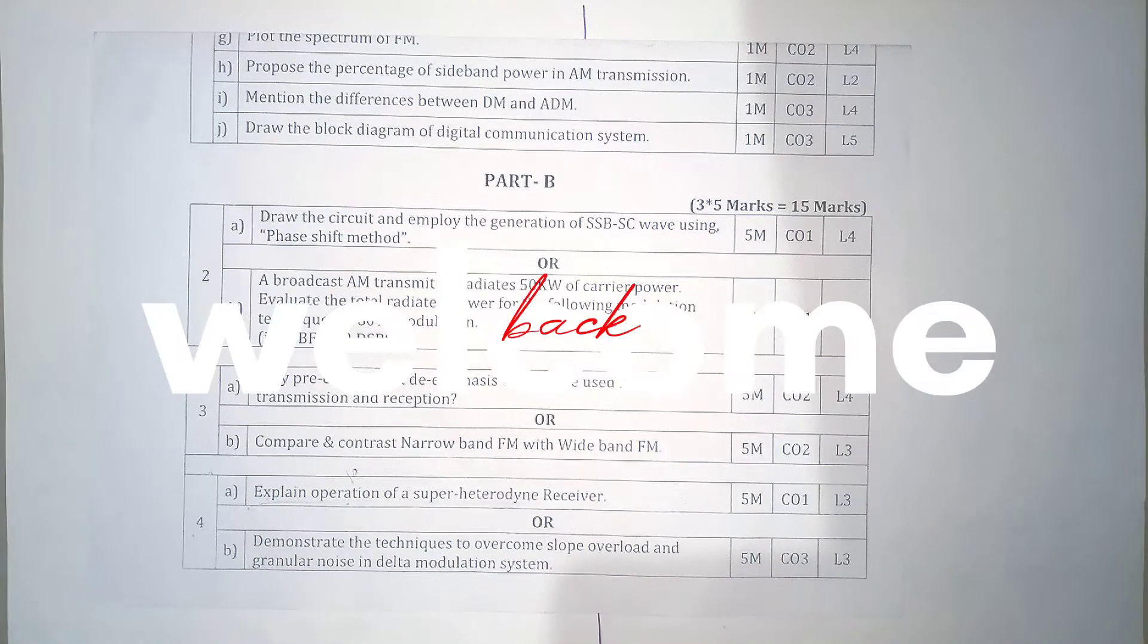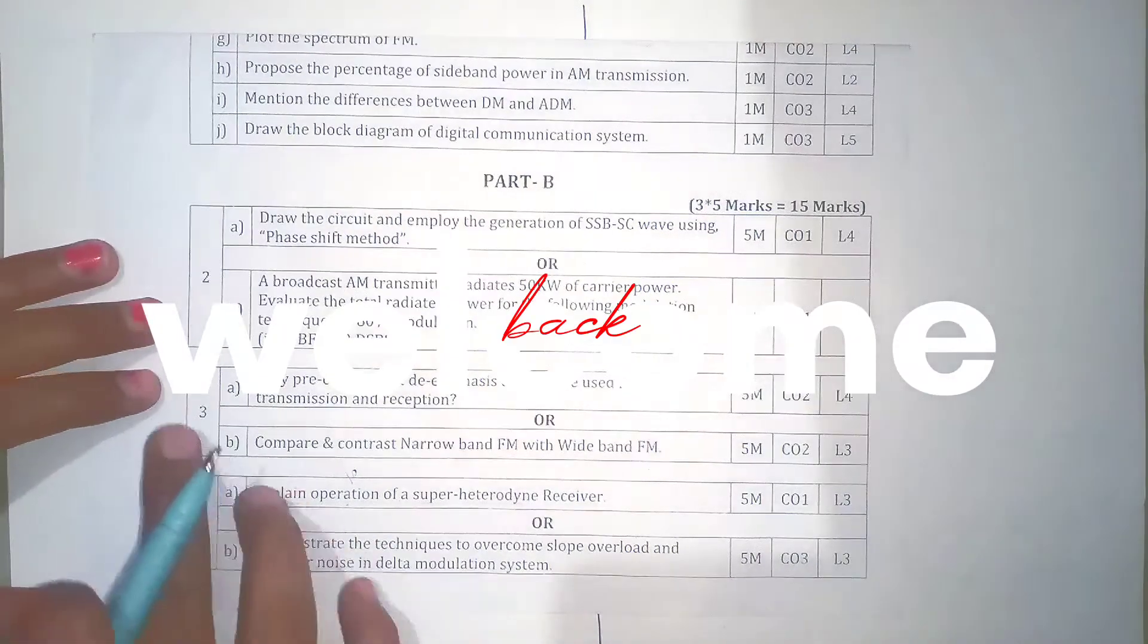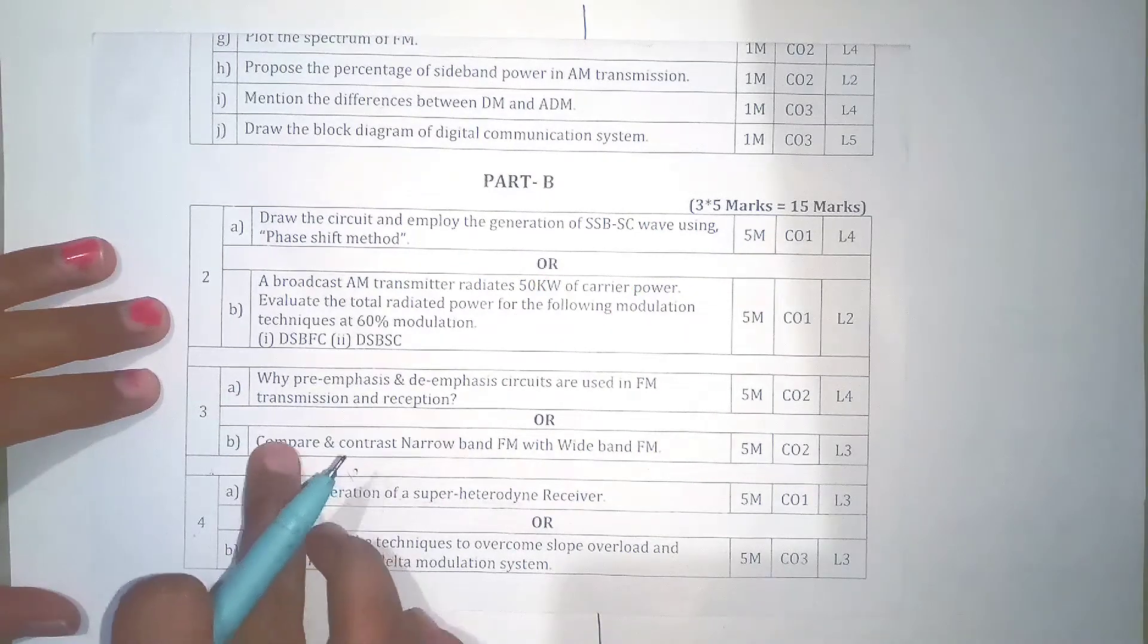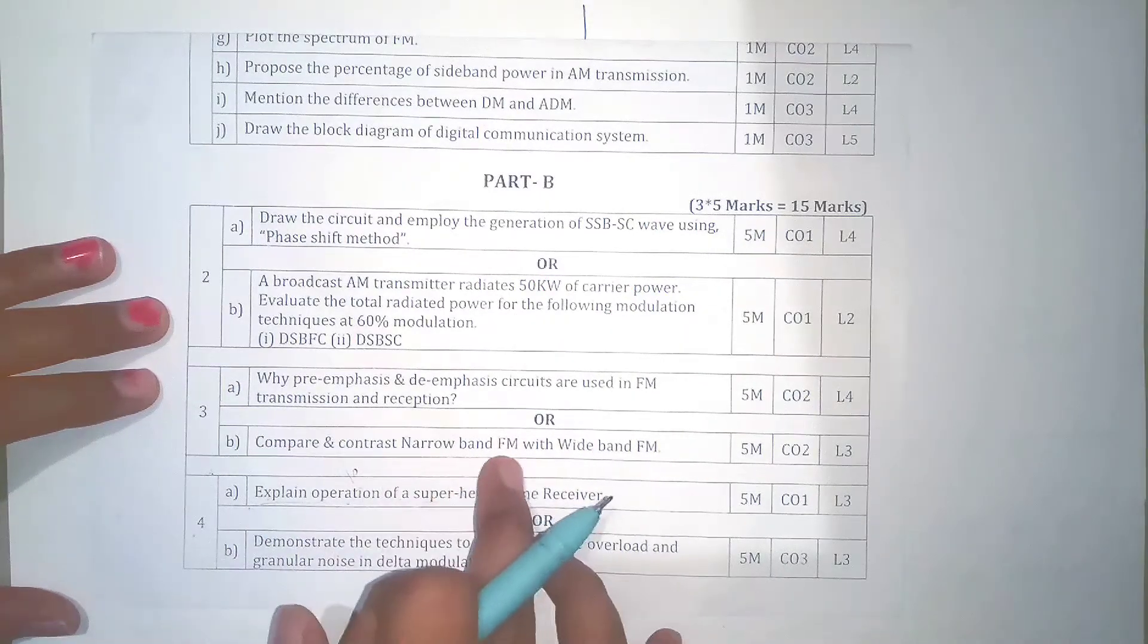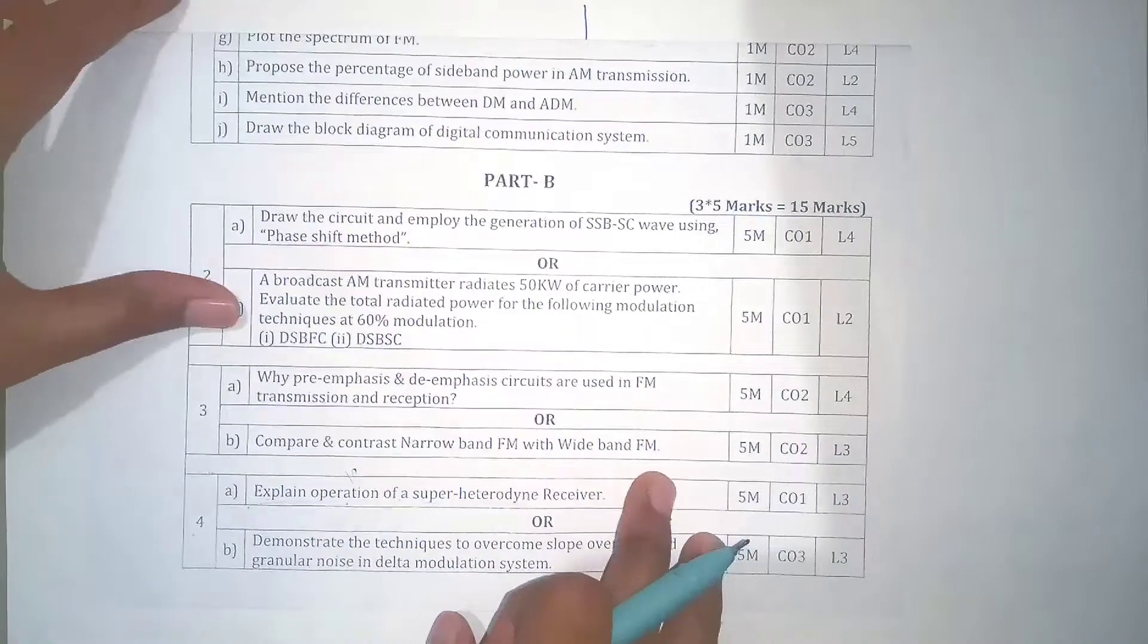Hey guys, welcome back to the channel. In this video I'm going to talk about the third question, part B, which is to compare and contrast narrowband FM with wideband FM. Narrowband FM means narrowband frequency modulation, and wideband FM means wideband frequency modulation.